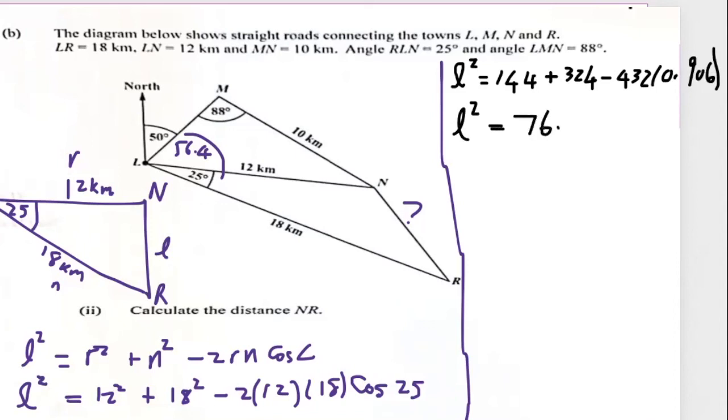Now working this out, L squared is equal to 76.61, so just working out all of this, to give me 76.61. Please note, you can say 432 times 0.906, get your answer. So then you say 144 plus 324 minus your answer. Now we square root both sides to get rid of square, and the square root in both sides, we have L is equal to 8.75 kilometers.